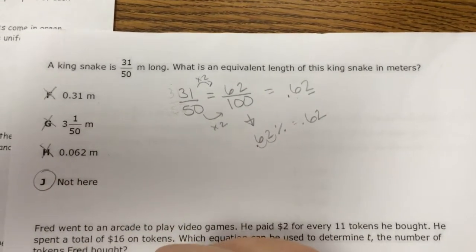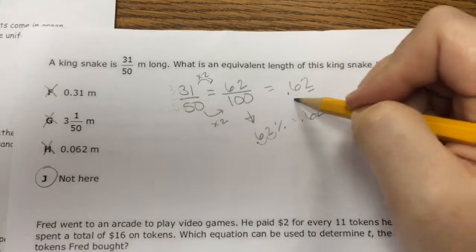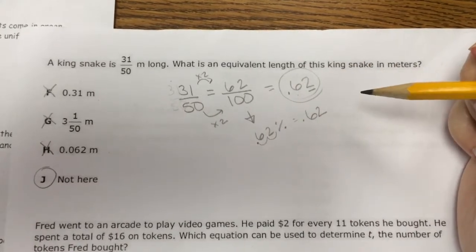So the correct answer would be J. It's not here. Because this is the correct answer. 62 hundredths.